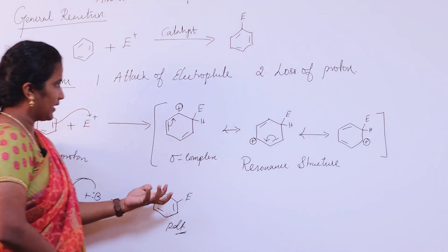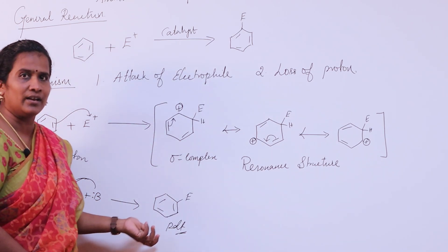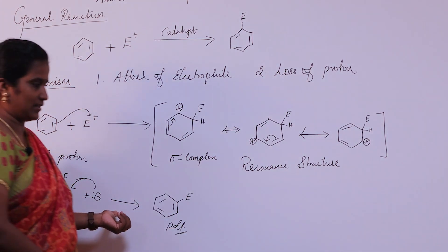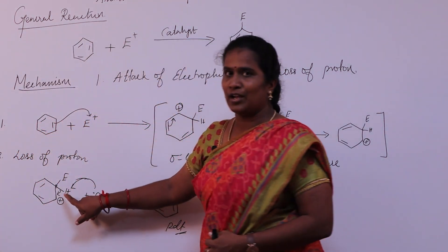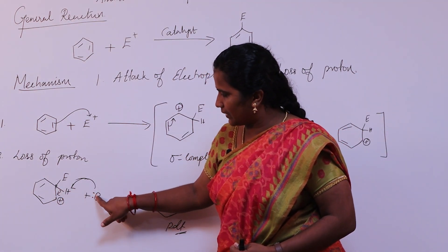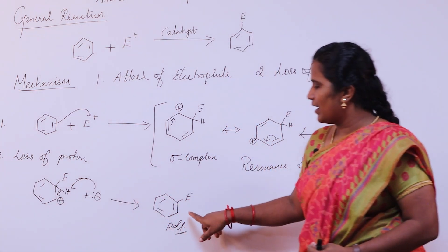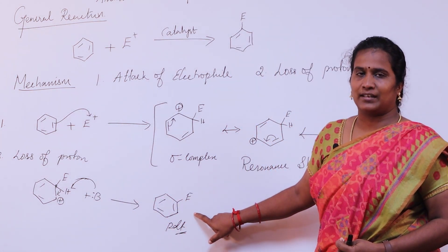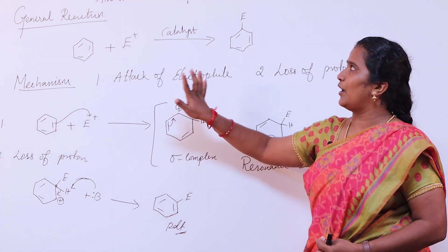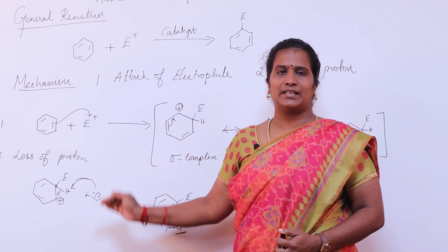The second step is loss of a proton. When a base is added to this intermediate, the base attacks the proton. The proton is removed and the electrophile is neutralized, forming the electrophilic substitution product — the electrophile is now substituted on the benzene ring.